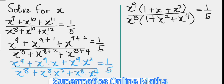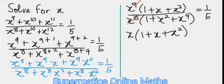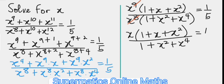Then x to the power of nine over x to the power of eight simplifies to just x, such that the equation becomes x times (1 plus x plus x squared) in the numerator, over (1 plus x squared plus x to the power of four) in the denominator, equal to one over five.